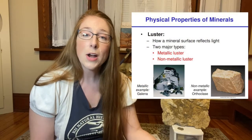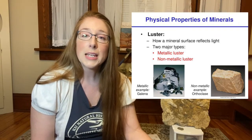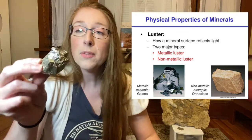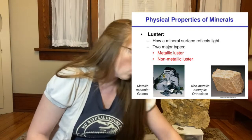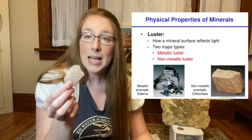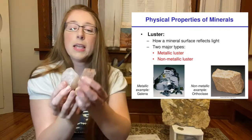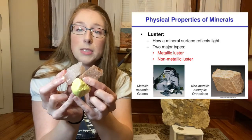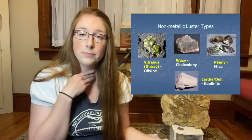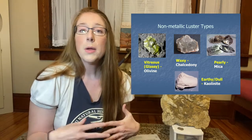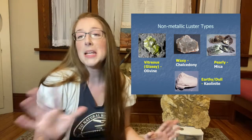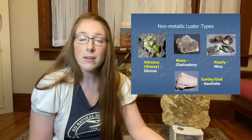The next property we'll look at is luster. Luster is the way that light interacts with the surface of a mineral. Luster can either be metallic — here is an example of a metallic mineral, you can see that it's reflecting light the way that a metal would — or it can be non-metallic. For non-metallic minerals you can go further and describe the luster as glassy, earthy, dull, pearly, oily, or silky. There are many different ways to describe a non-metallic mineral.